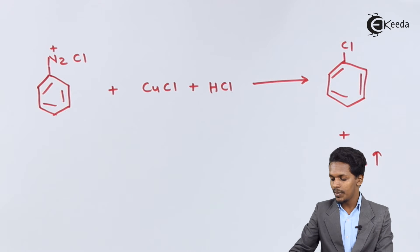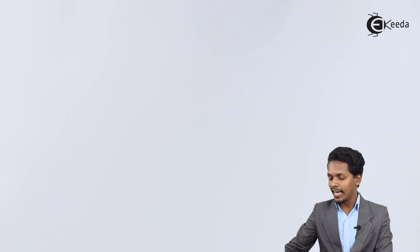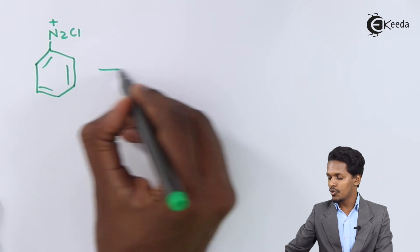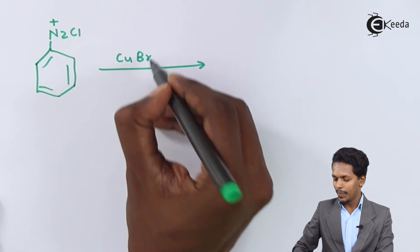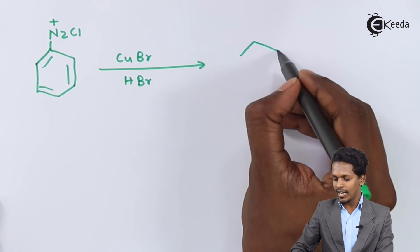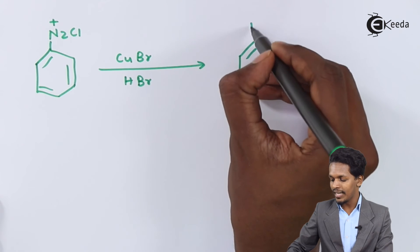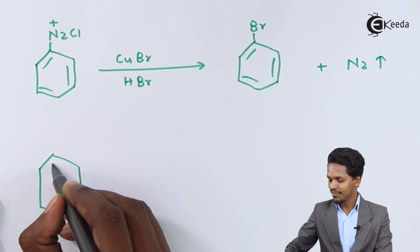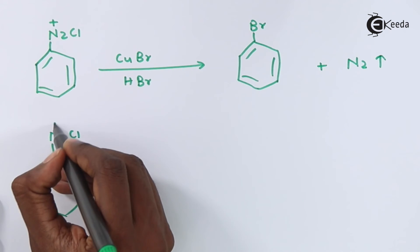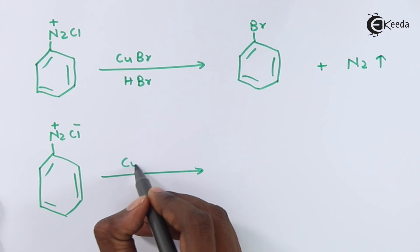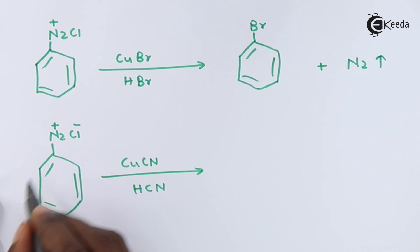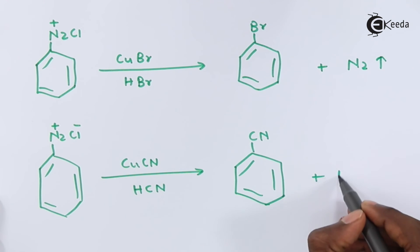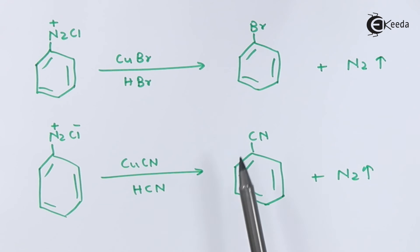This reaction is also applicable to obtain other products. Suppose we consider benzene diazonium chloride and treat it with CuBr along with HBr — the product obtained is bromobenzene, with evolution of nitrogen gas as a by-product. Further, if we have N₂Cl on benzene and treat it with CuCN along with HCl, we can easily convert the N₂Cl group to give cyanobenzene, again with nitrogen evolved as a by-product.